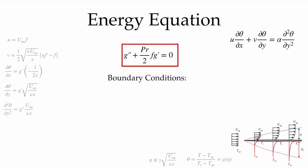We need two boundary conditions for this second-order equation. The first is that the non-dimensional temperature at the surface equals 0, and the second is that the non-dimensional temperature far away from the plate equals 1. These two boundary conditions are sufficient to solve the energy ODE, though the far-field condition will require some handling when we go to actually solve it, as we'll see in a subsequent video.